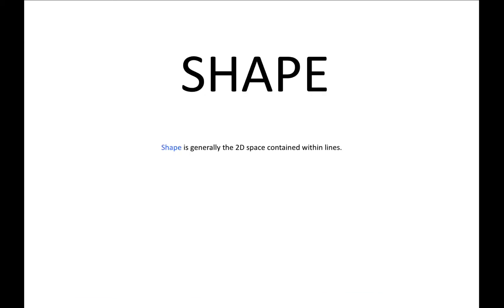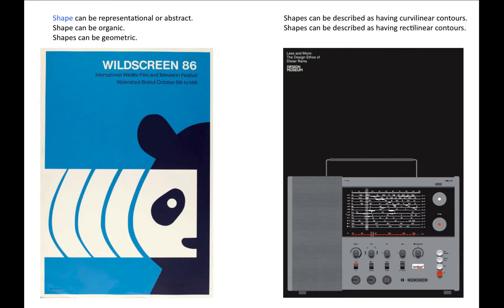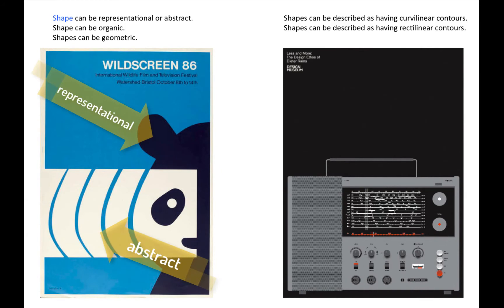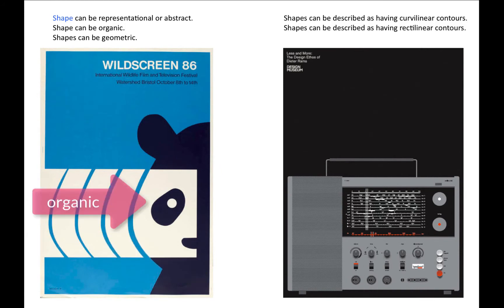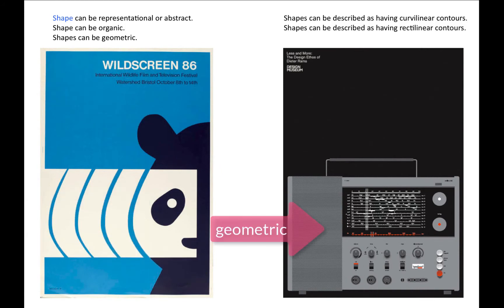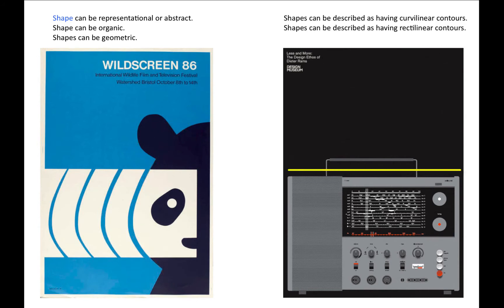Shape. Shape is generally the 2D space contained within lines. Shape can be representational or abstract. Shape can be organic. Shape can be geometric. Shapes can be described as having curvilinear contours. Shapes can be described as having rectilinear contours.